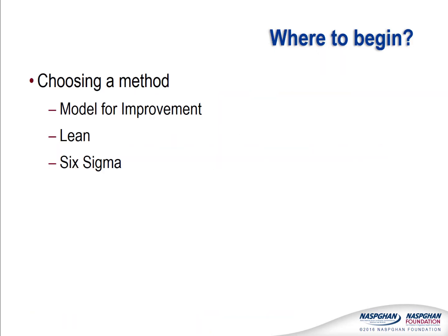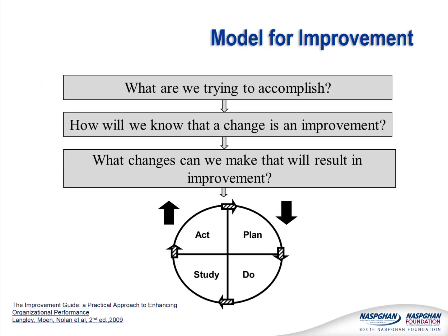There are various methods used for the quality improvement process. Think of it like having a few different toolboxes at your disposal with different but sometimes similar tools in each one. A few examples of what we hear about or see frequently in the healthcare world are the Model for Improvement, Lean, and Six Sigma. The Model for Improvement is the one that we will be illustrating during this talk and applying to our clinical simulation.